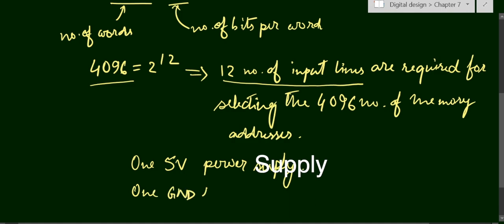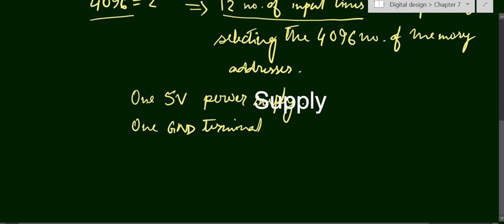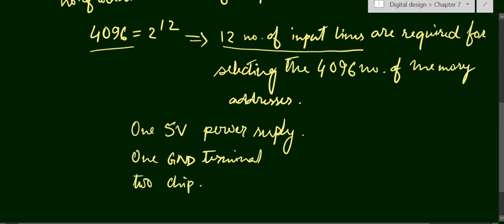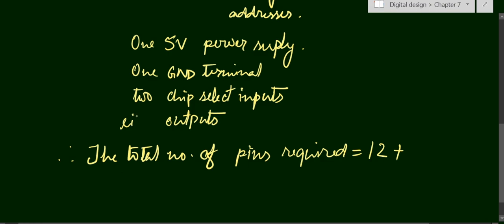We have 12 input lines, one 5-volt power supply, and one ground terminal. The question states we have two chip select inputs and we will have eight output lines. Therefore the total number of pins required is: 12 decoder inputs + 8 outputs + 1 voltage supply + 1 ground + 2 chip select lines = 24 pins total.